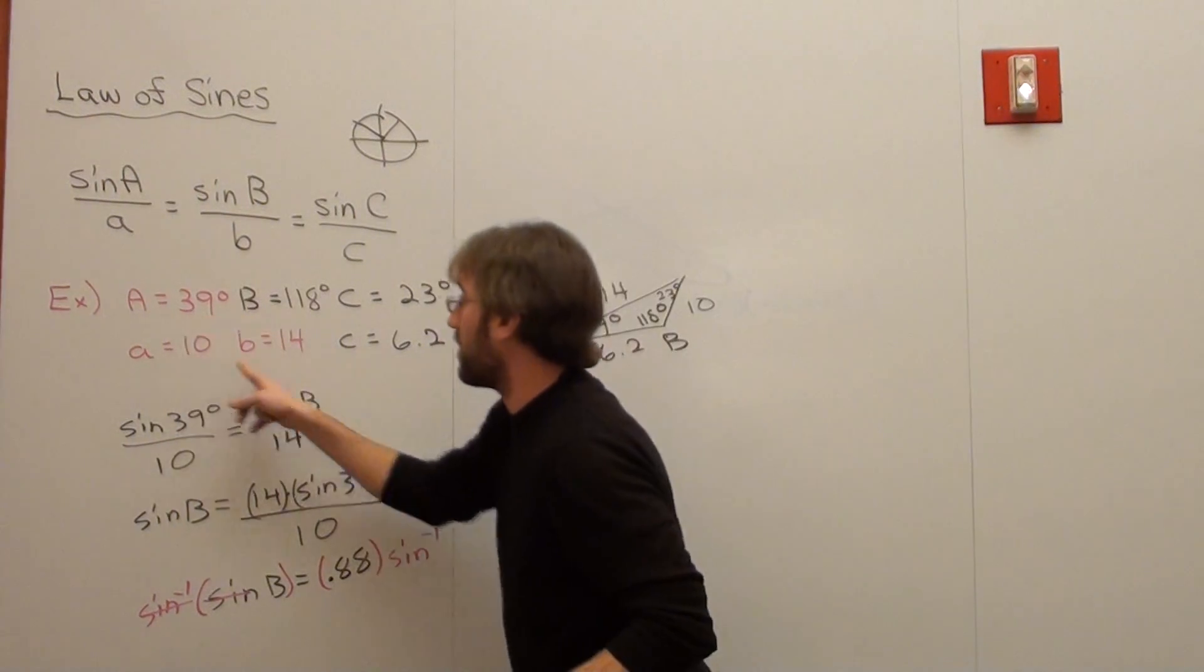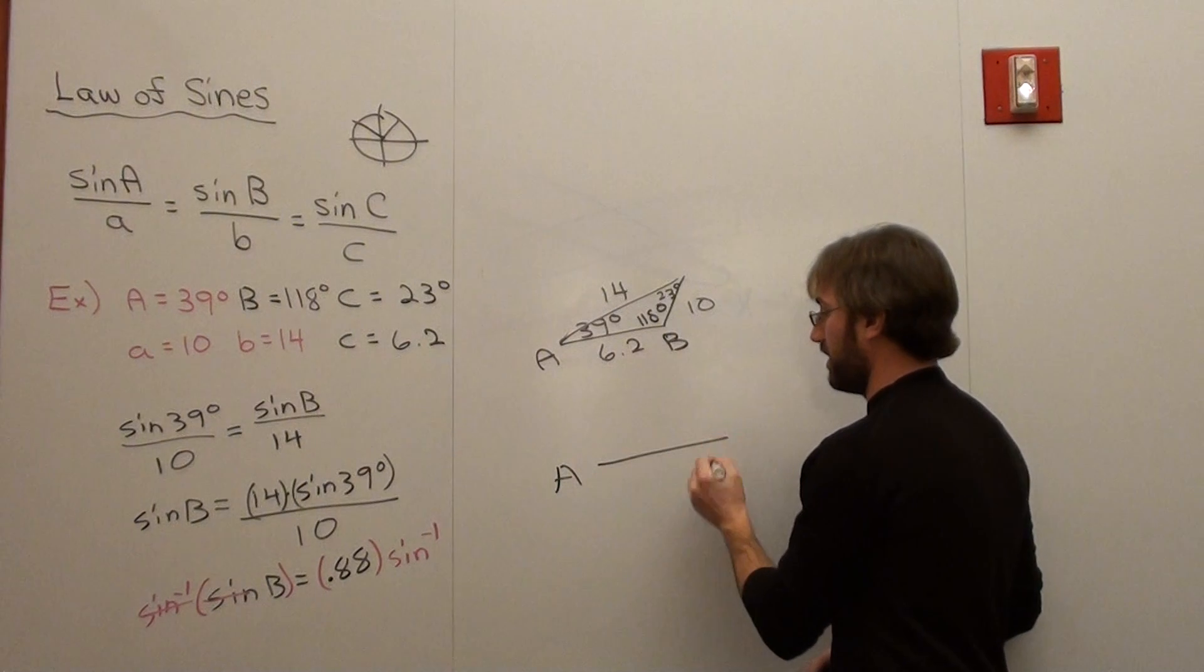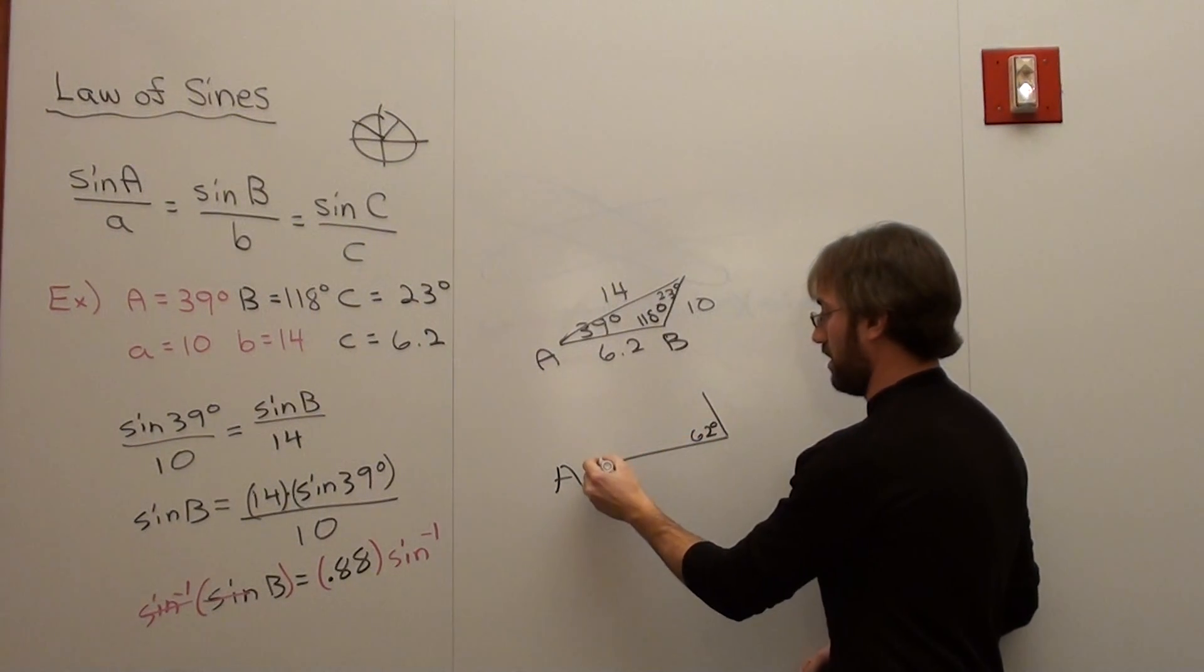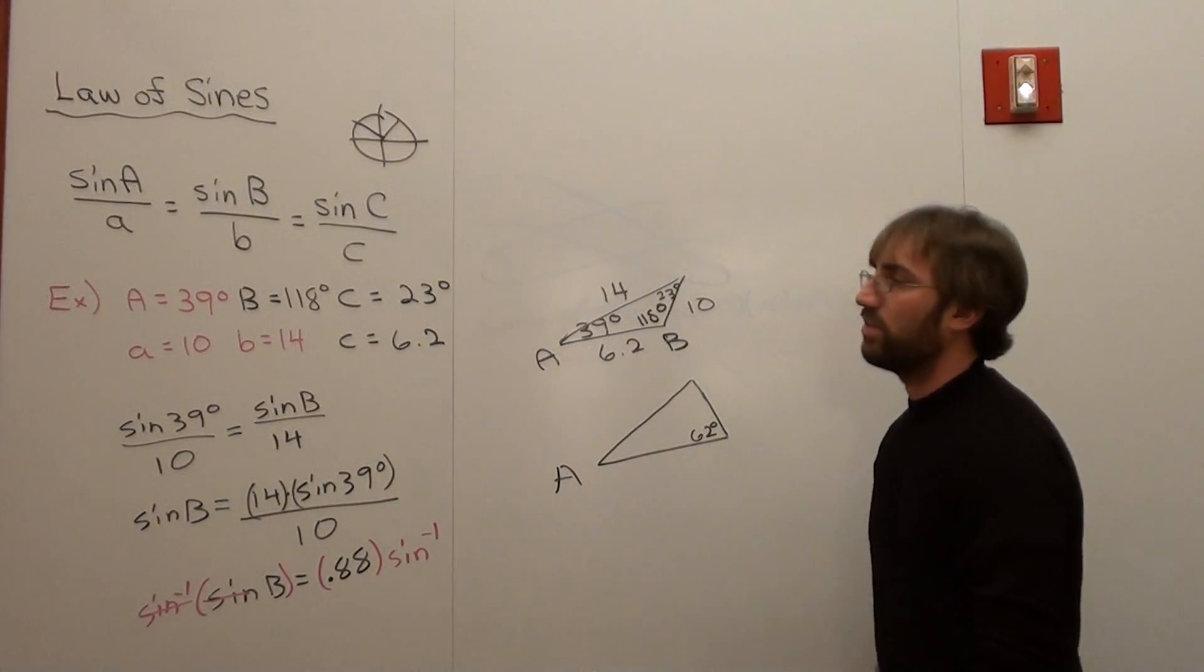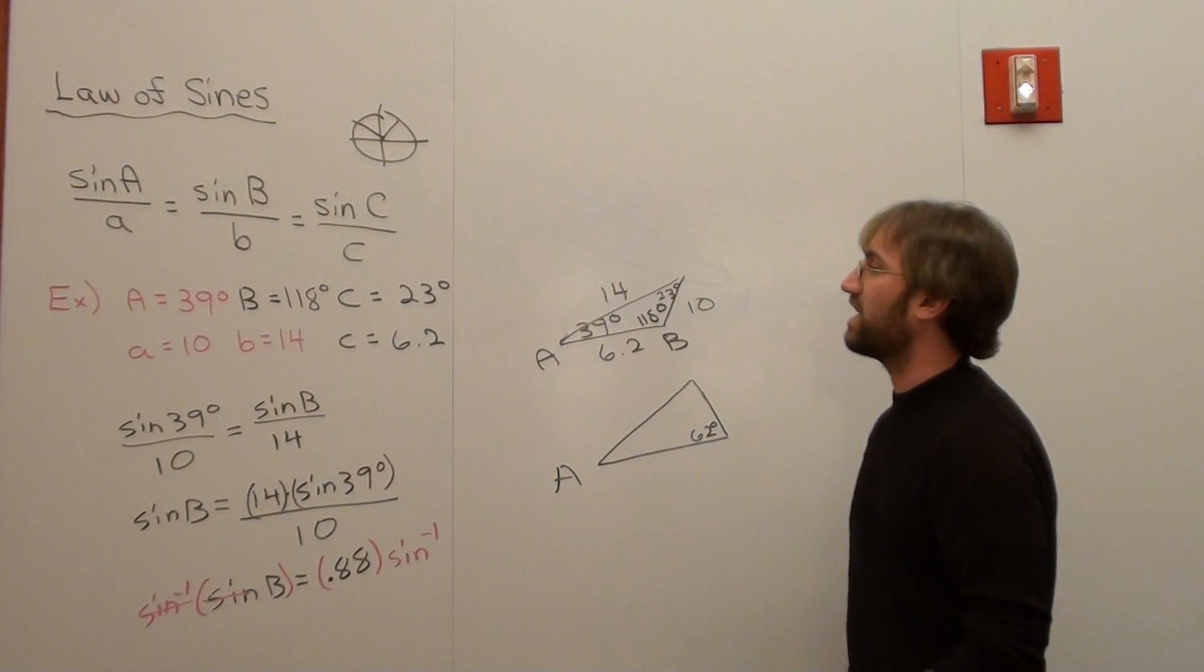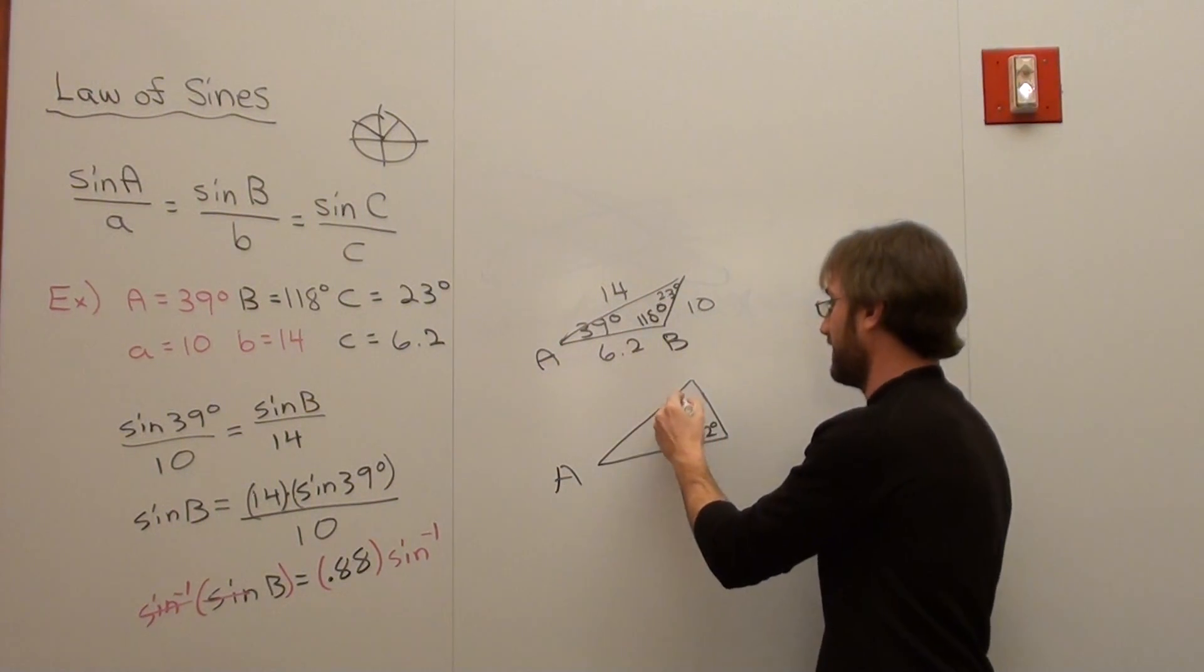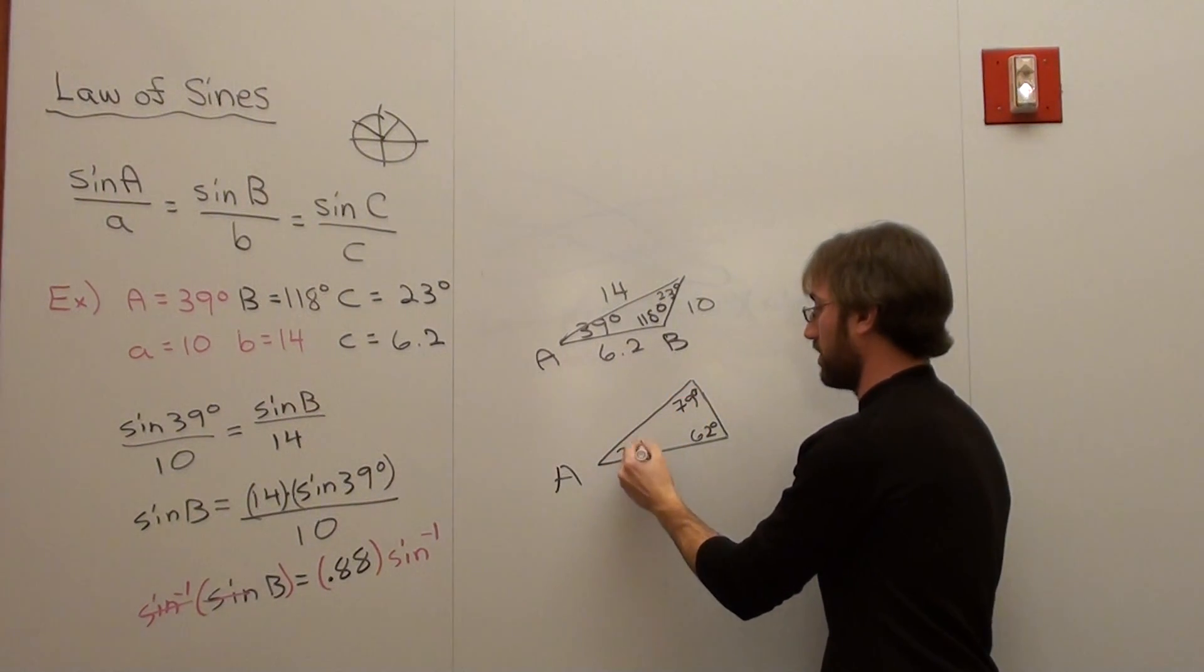Or given these parameters, my B was 62 degrees. So my A is here at 39, my B is here at 62 degrees. 62 plus 39 is 101, so C is 79 degrees.